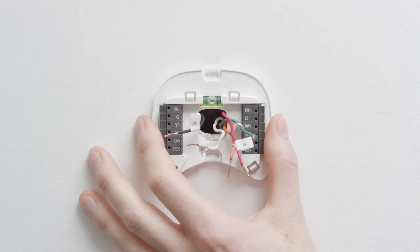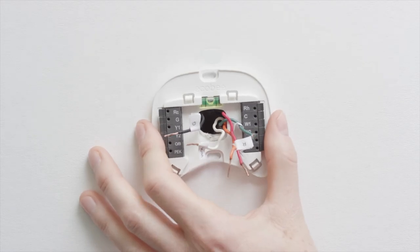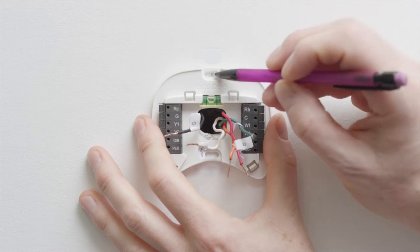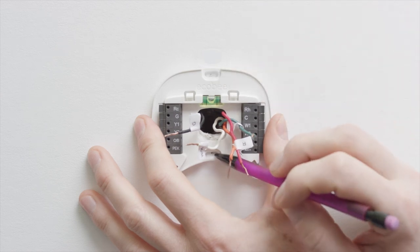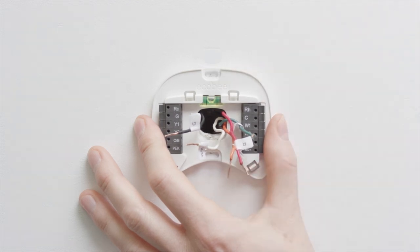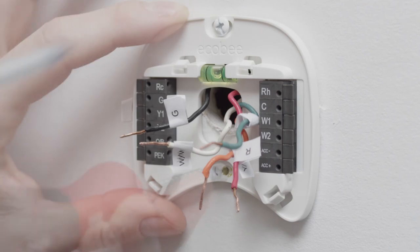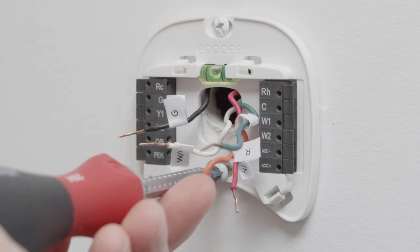Position your Ecobee 4 backplate over the existing wire hole. Take care to cover the old holes. Use the built-in level to straighten the backplate. Then, using the backplate as a template, mark the location of the mounting holes on the wall with a pencil. Drill two holes and mount the backplate using the drywall plugs and screws provided.